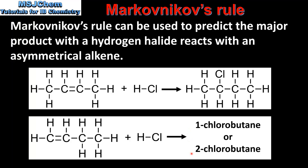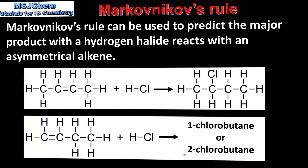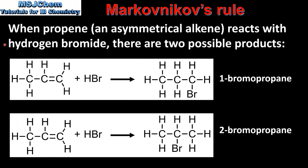Next we look at how to use Markovnikov's rule to predict the major product. The example we look at is propene, which is an asymmetrical alkene. So when propene reacts with hydrogen bromide there are two possible products: 1-bromopropane or 2-bromopropane.